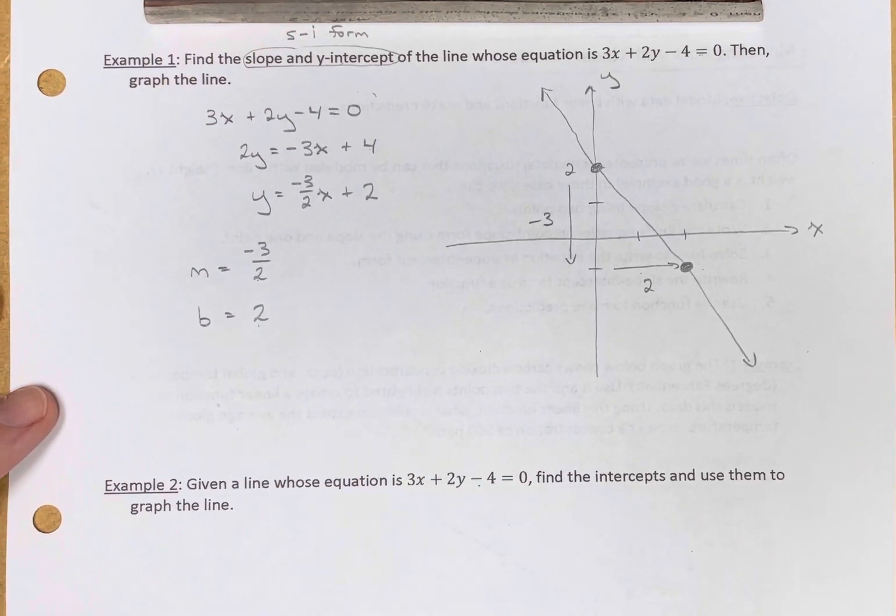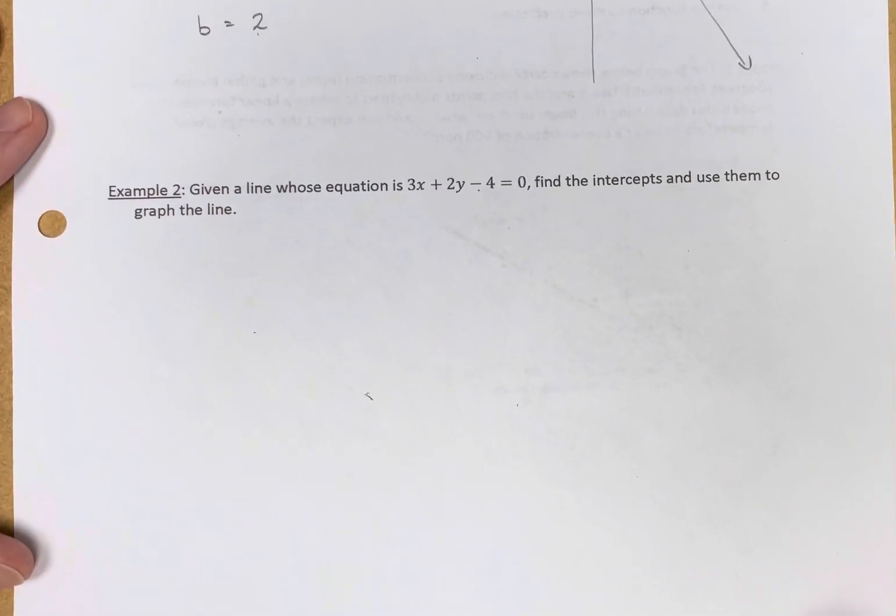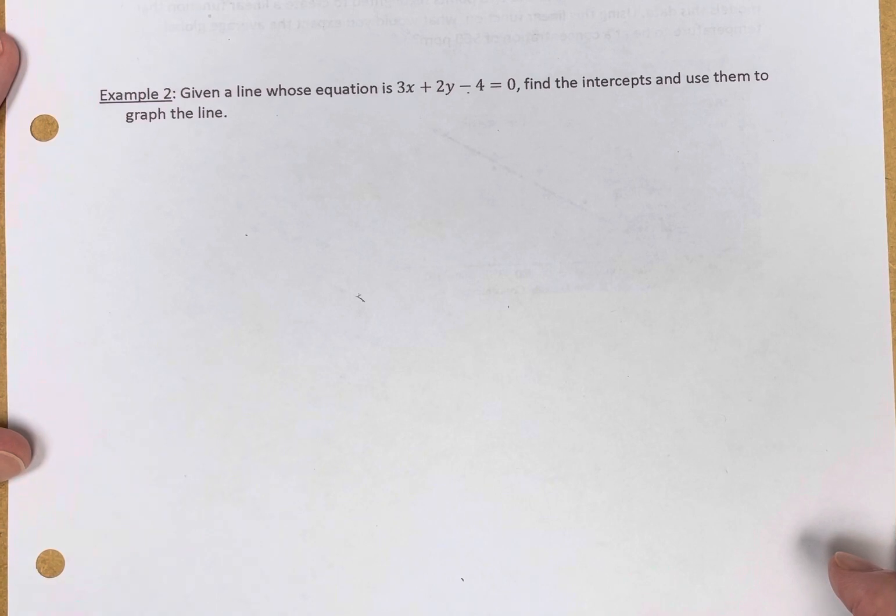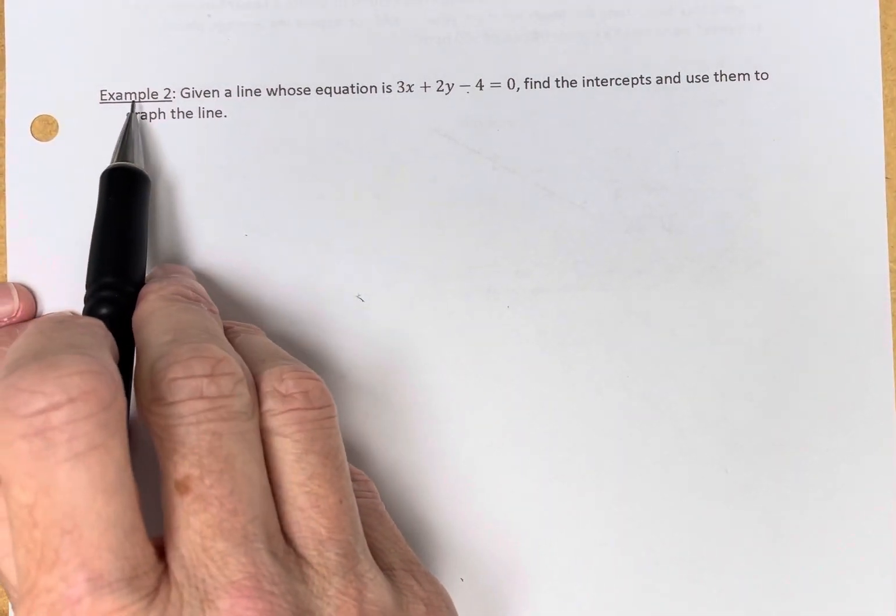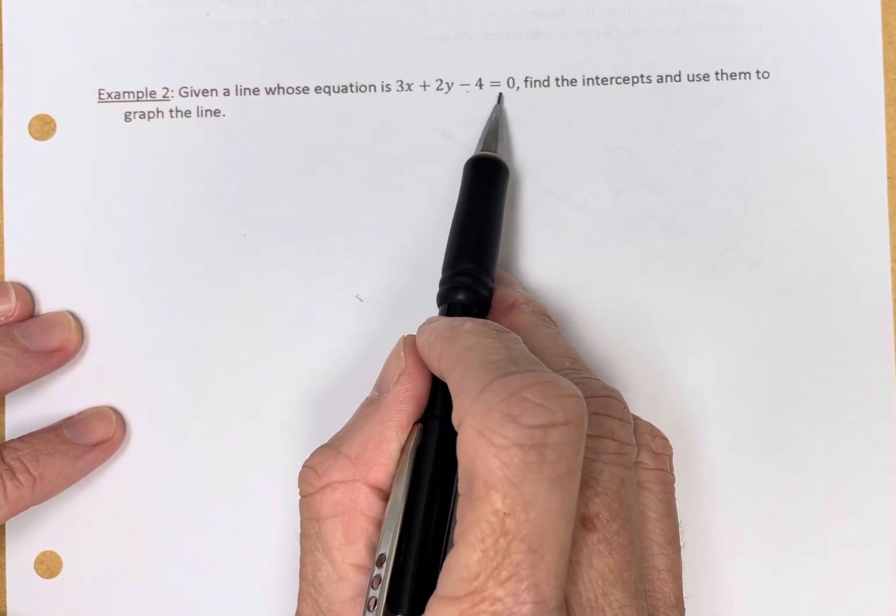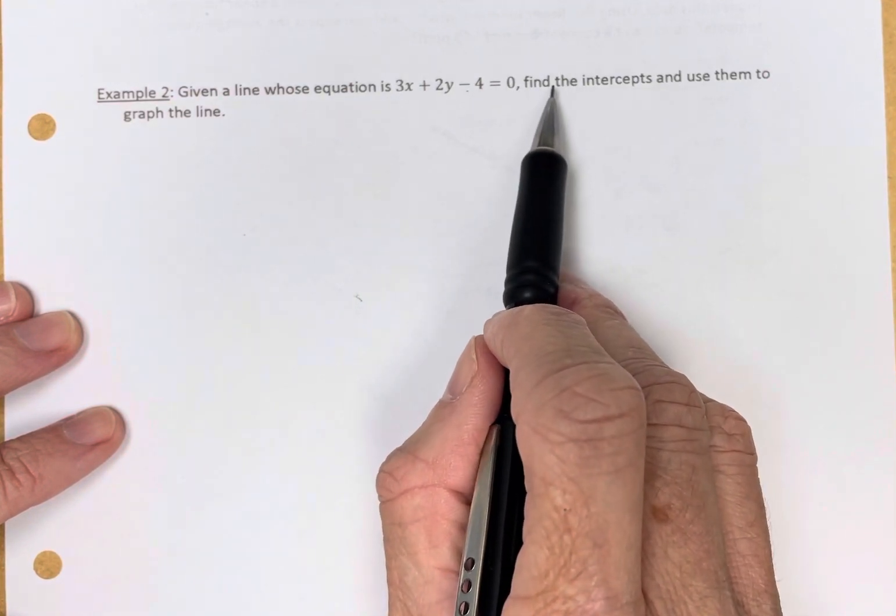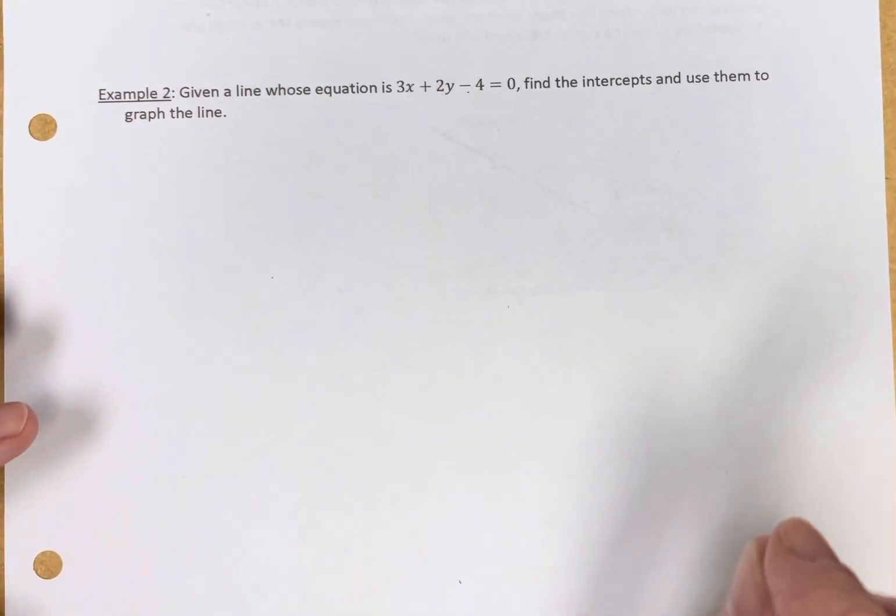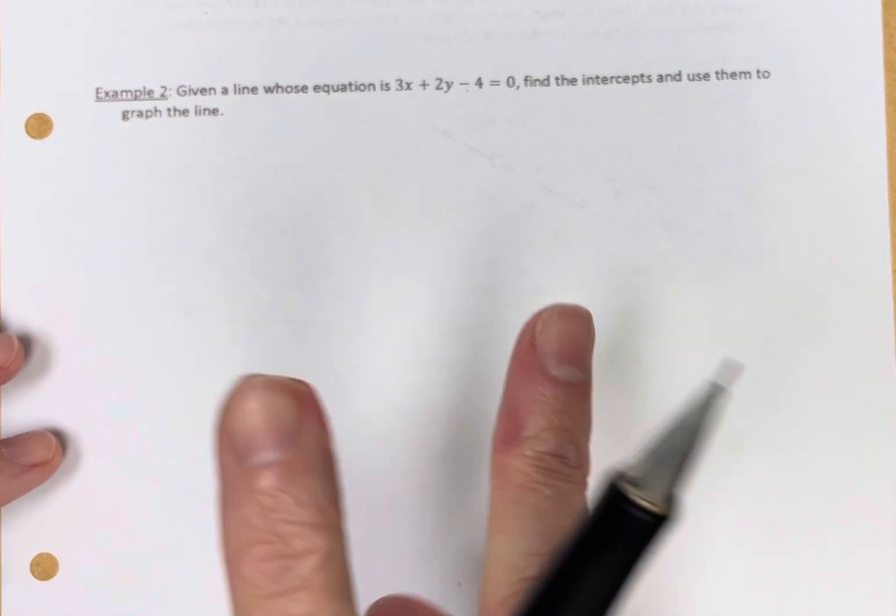In example 2, we're going to do the exact same problem, but we're going to graph it using intercepts. So here is the same problem. The equation is 3x plus 2y minus 4 equals 0, but now we're asked to find the intercepts and use them to graph the line. An x-intercept and y-intercept gives us two points.